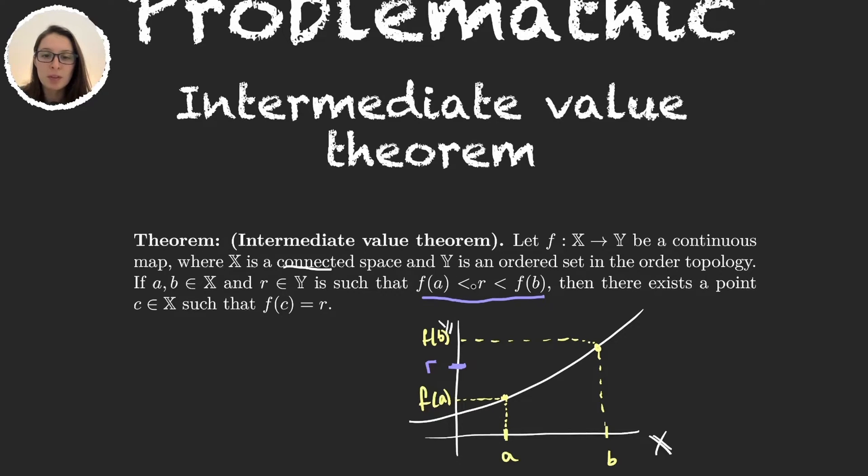then there will always exist some point in the domain c such that f of c is equal to this point that we took r. This is a very important theorem.